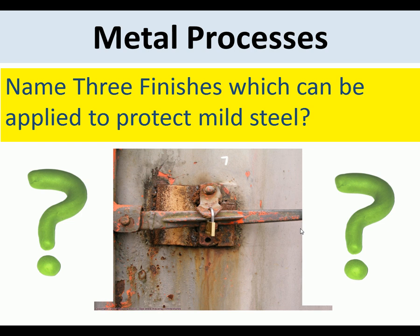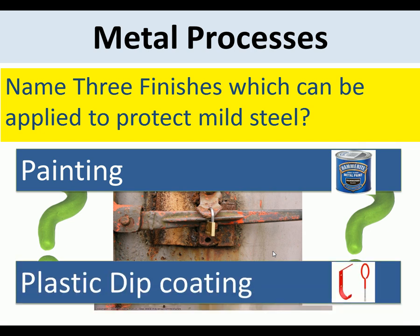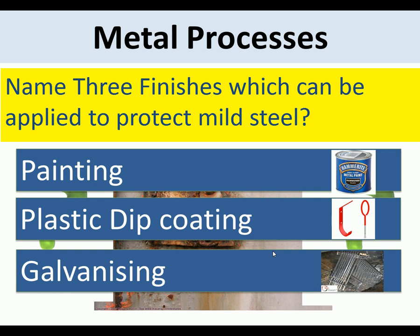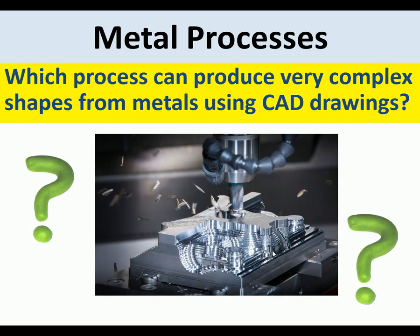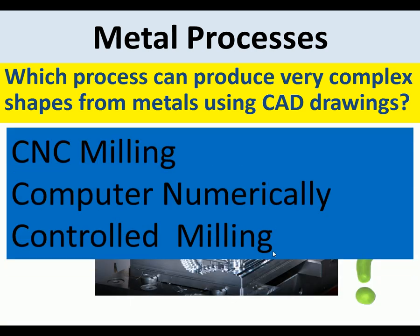Now it's time for questions. Name three finishes which can be applied to protect mild steel. Three finishes to protect mild steel are: painting, plastic dip coating, and galvanizing. Which process can produce very complex shapes from metals straight from CAD drawings? The process is CNC milling — computer numerically controlled milling.